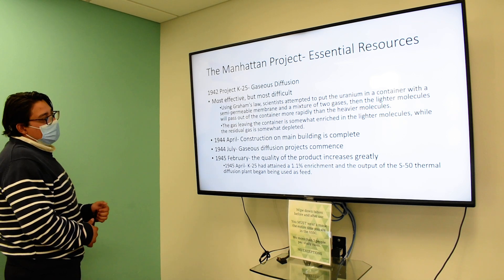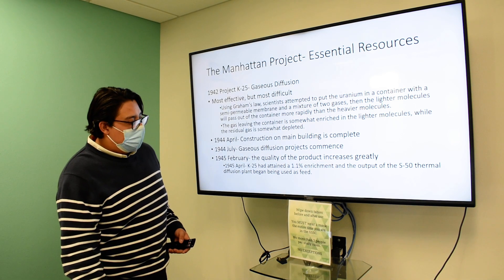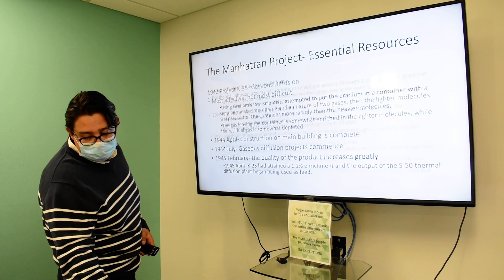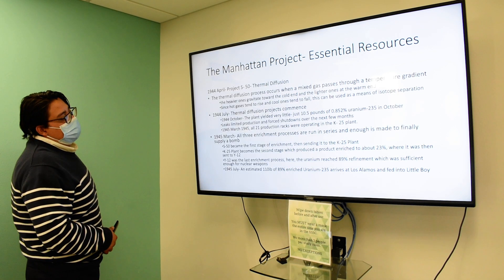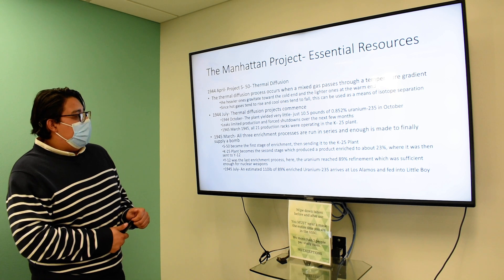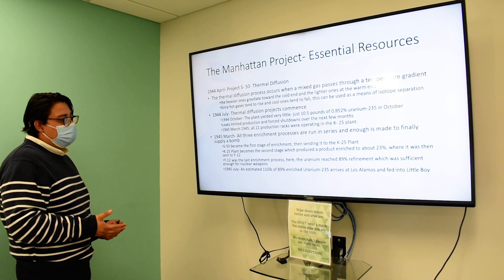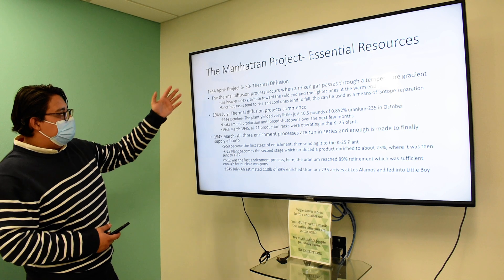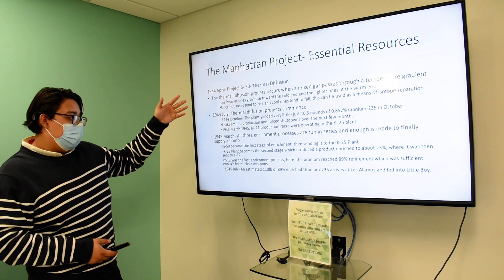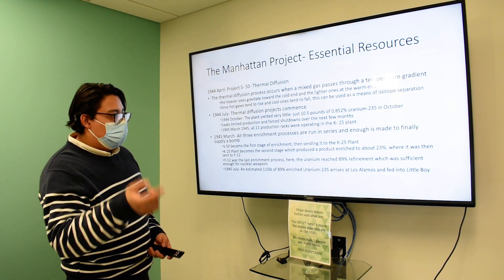Gaseous diffusion is the most effective but most difficult method, producing enriched uranium through Graham's Law via project K-25. Thermal diffusion, the S-50 project, serves as the first stage of enrichment. The process is sequential: uranium goes from S-50 thermal diffusion, then to K-25 gaseous diffusion, then to Y-12 electromagnetic separation, getting refined more and more at each stage. By July 1945, they produce 110 pounds of 89% enriched Uranium-235, which is put into Little Boy.